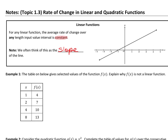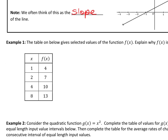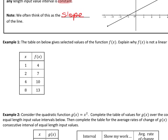We're going to practice doing the average rate of change formula over and over again. The table below gives selected values for the function f(x). We're going to explain why f(x) is not a linear function. Now, most of us when we've done this before have done this — where you just check to see the changes in the y's and check to see if it's constant.